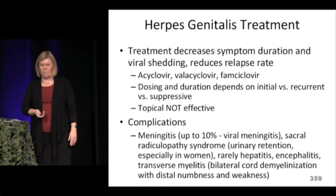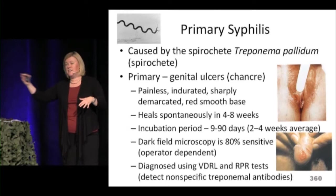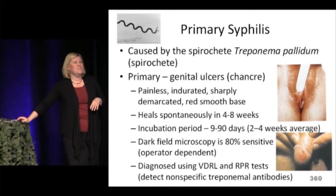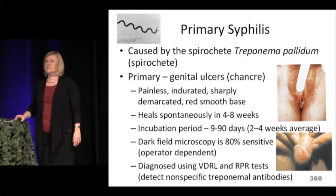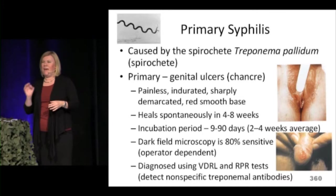Syphilis has three phases: primary, secondary, and tertiary. It's caused by the spirochete Treponema pallidum, which is still sensitive to penicillin. Primary syphilis is often missed because the chancre is a painless ulcer — people may not recognize or seek treatment for it. It's a painless, indurated, demarcated lesion with a red base that resolves in about four to eight weeks, after an incubation period of about a month.